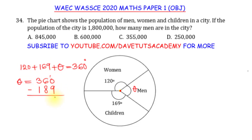Let me recalculate: 10 minus 9 is 1, carrying over gives 15, 15 minus 8 is 7. Actually, 120 plus 169 is 289, so this is supposed to be 289, not 189. So theta is 360 minus 289, which gives us 71 degrees. So theta is 71 degrees.